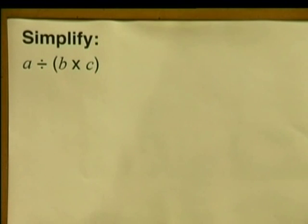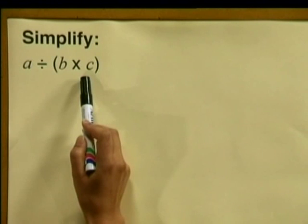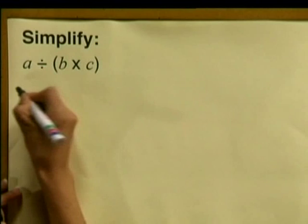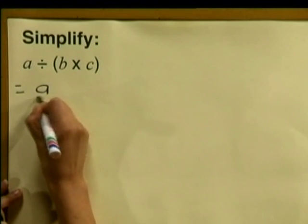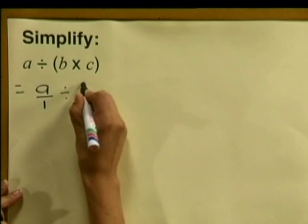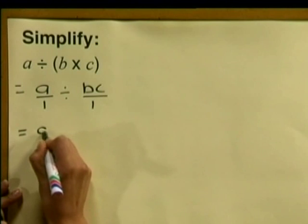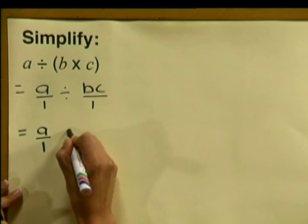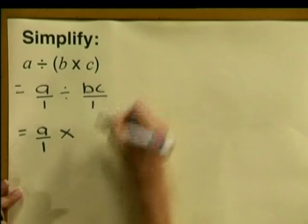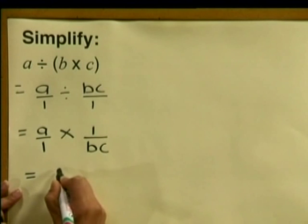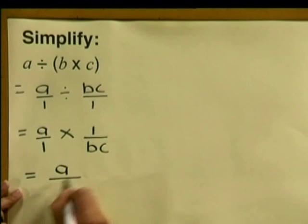Simplify A divided by B multiplied by C. This is different from the last example — the brackets tell us to divide A by the product of B and C. So we write A divided by 1, divided by BC. When we apply the flip and multiply rule we write A divided by 1 multiplied by 1 divided by BC, and when we simplify this we get A divided by BC.